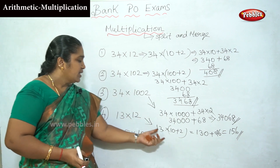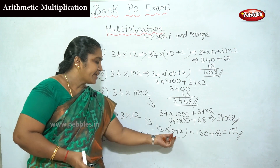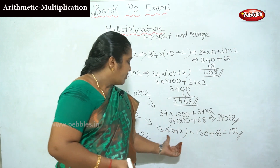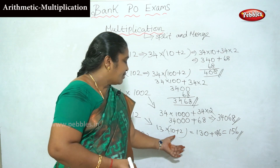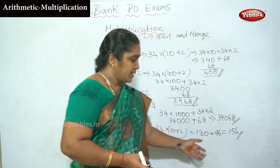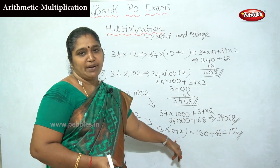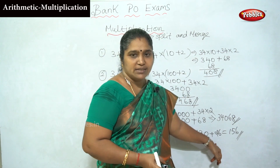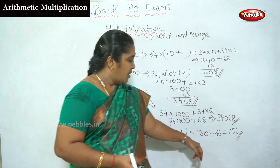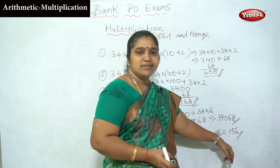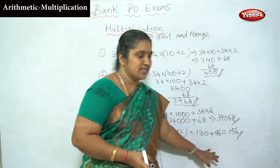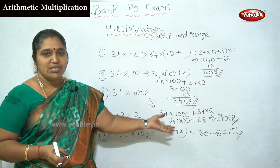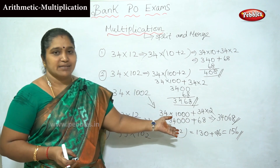13 into 12: split 12 into 10 plus 2, then multiply by 13. You multiply 13 by 10, and you multiply 13 by 2. 13 times 12 equals 156.